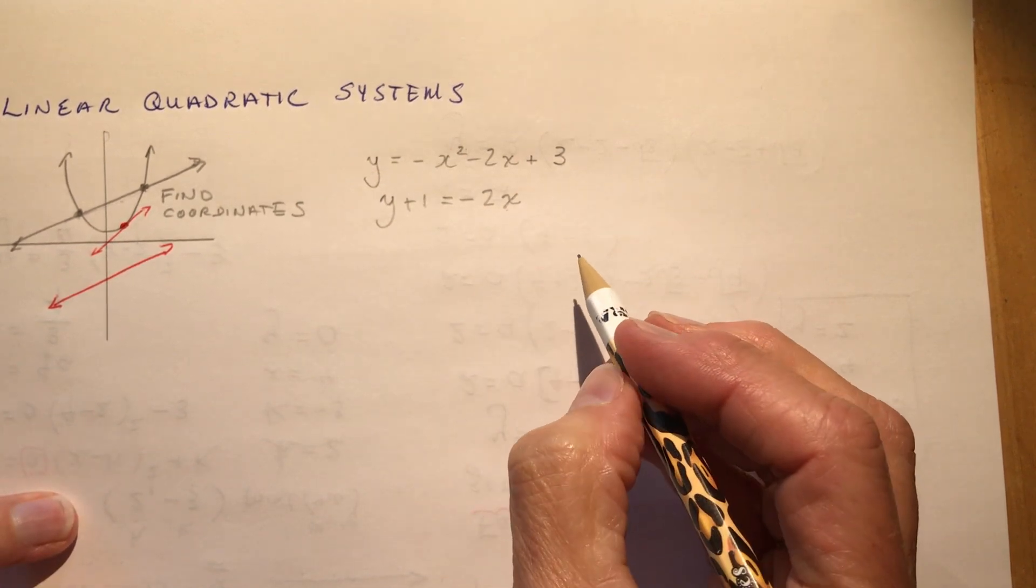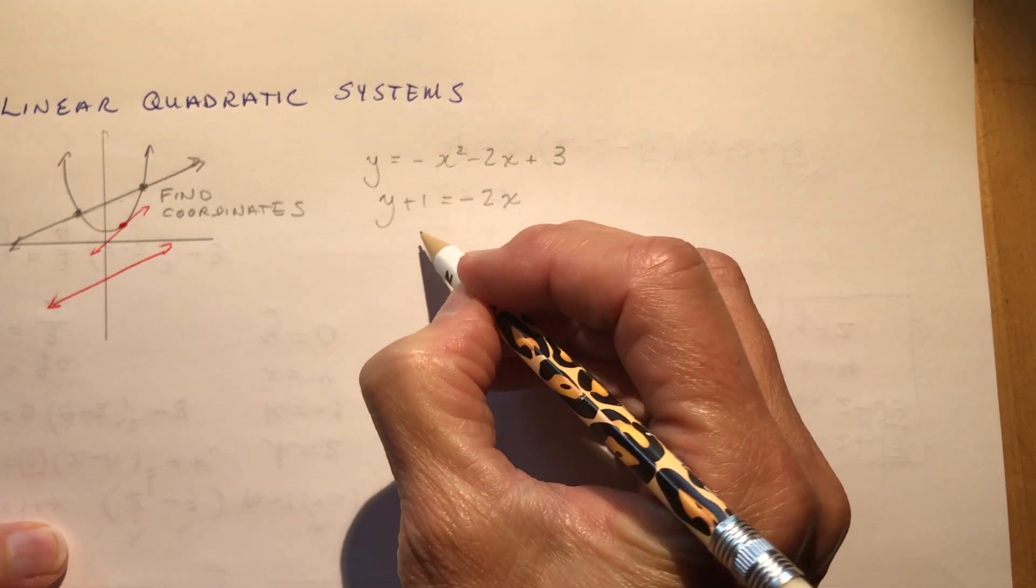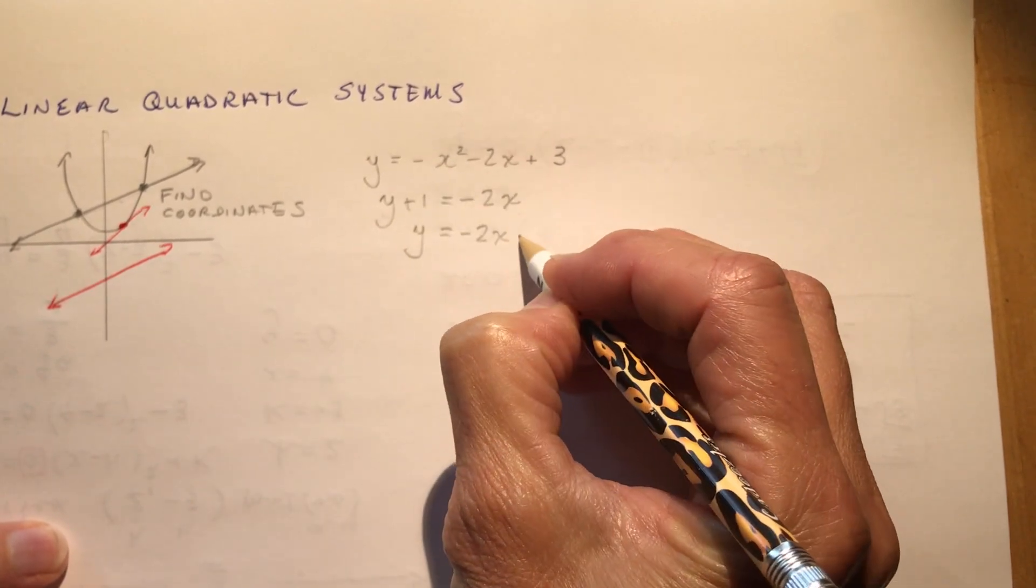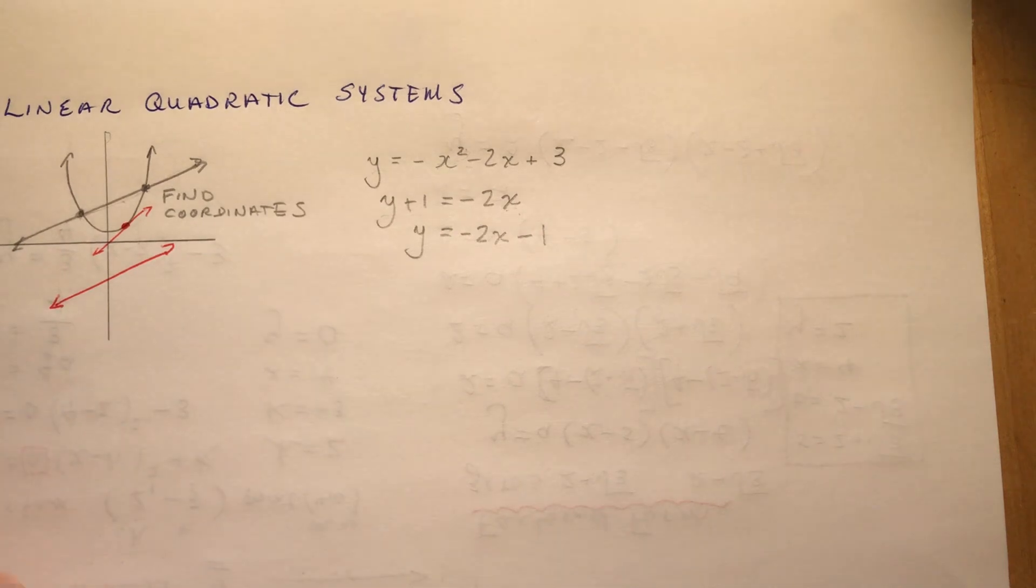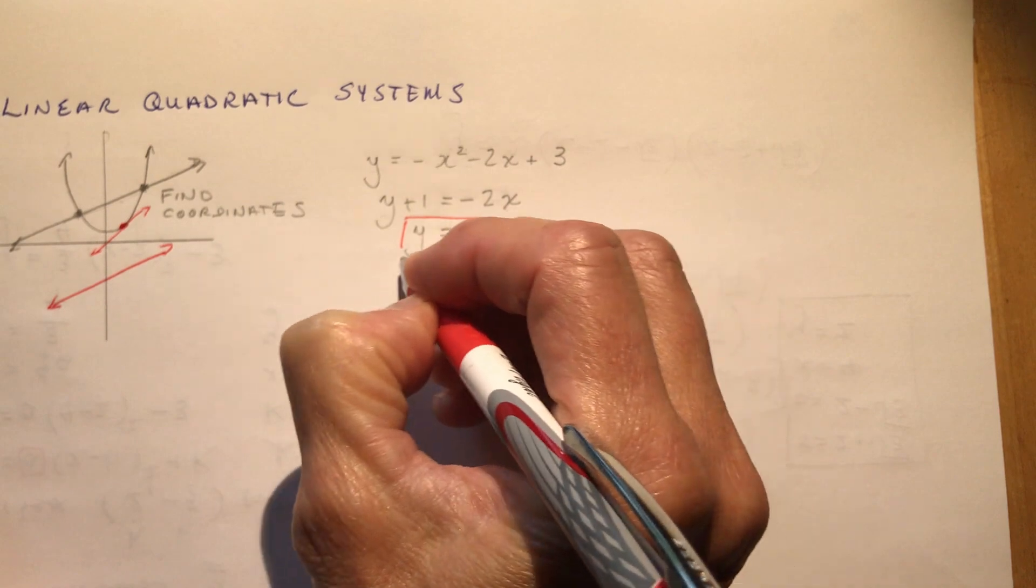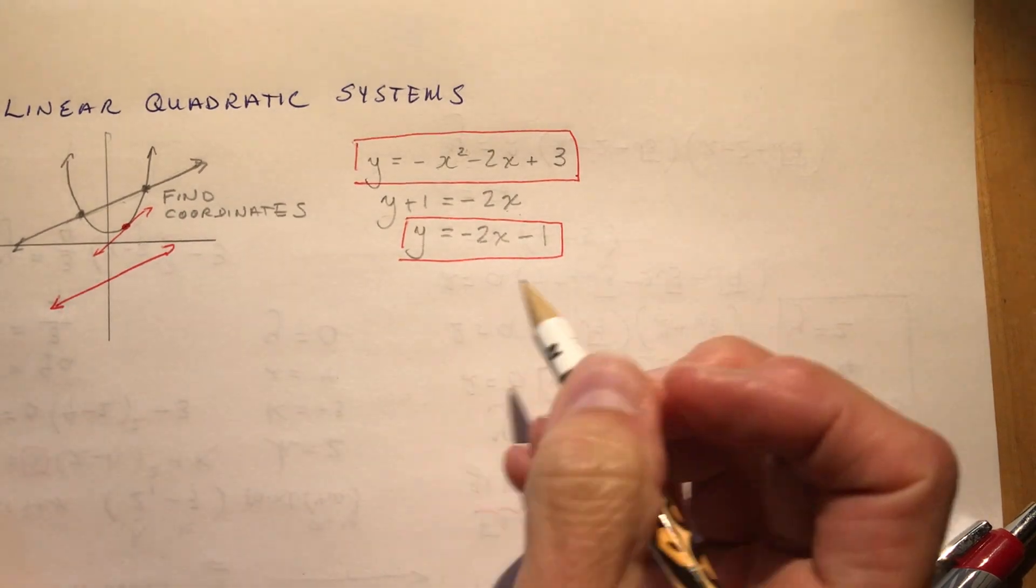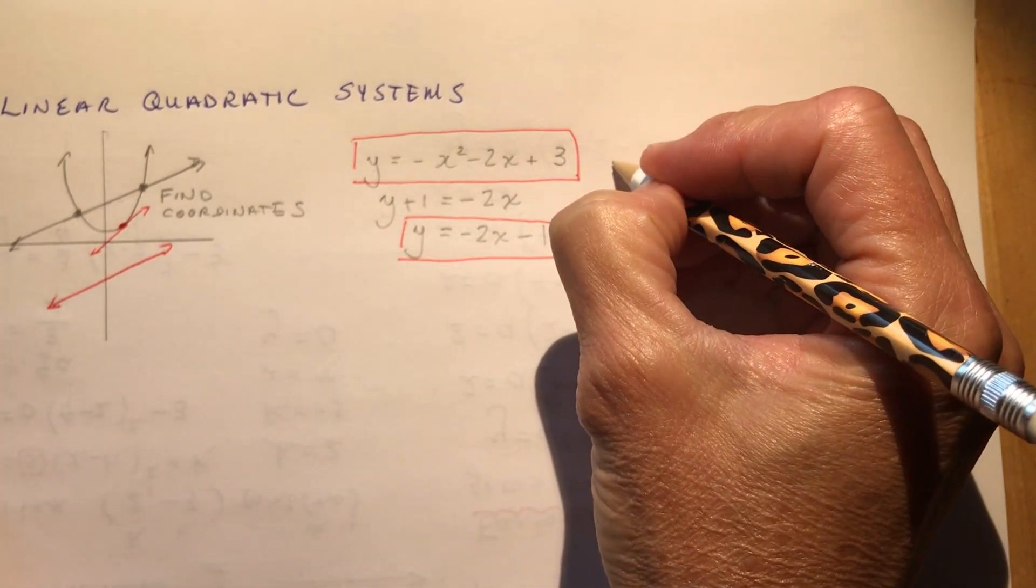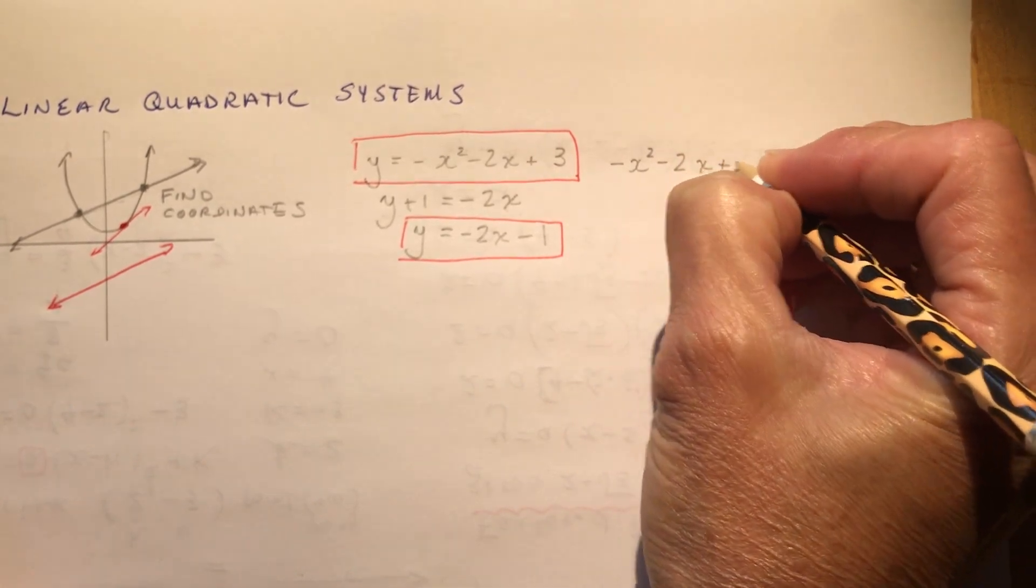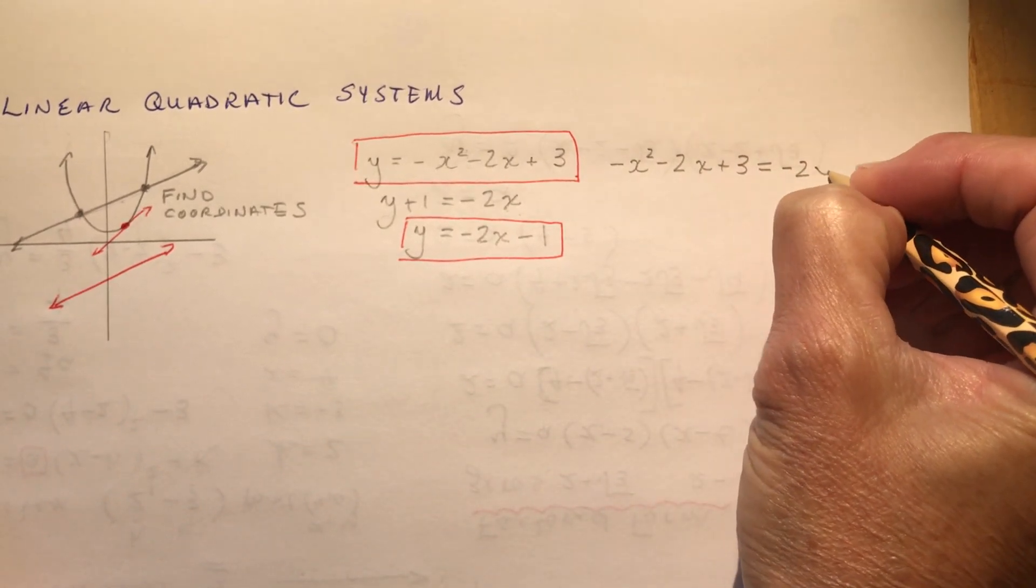So the first thing you would want to do is rewrite this in a format that just says y equals. So that means y is equal to minus 2x minus 1. And now that I have the equations written in the same format, y equals this and y equals this, I can set them equal to each other and simply solve. So this is like a comparison method that you would have done for linear systems. So I say minus x squared minus 2x plus 3 is going to be equal to minus 2x minus 1.